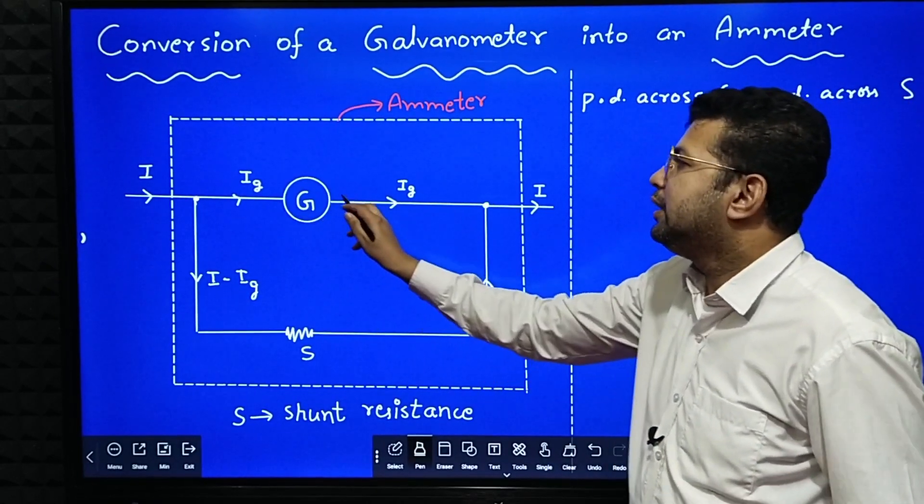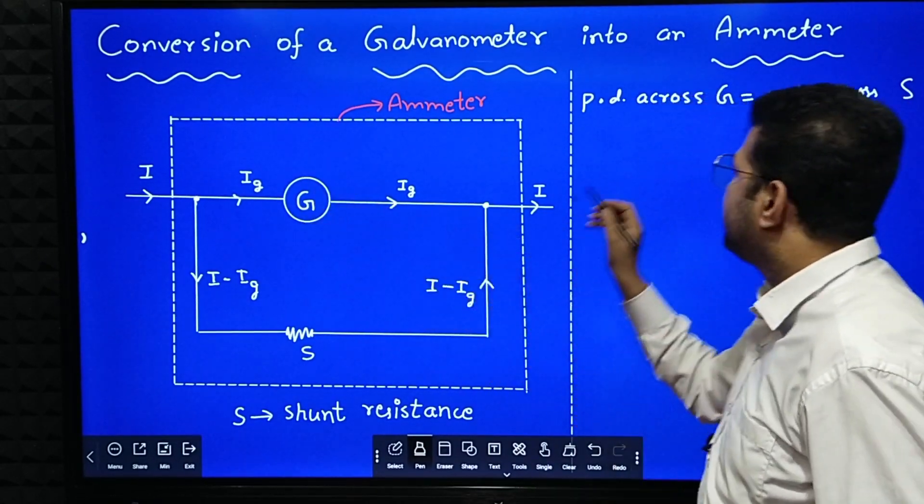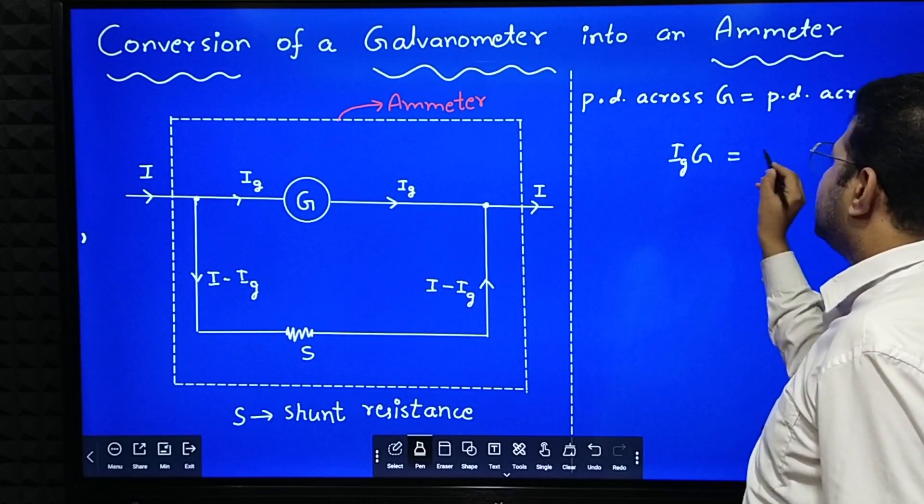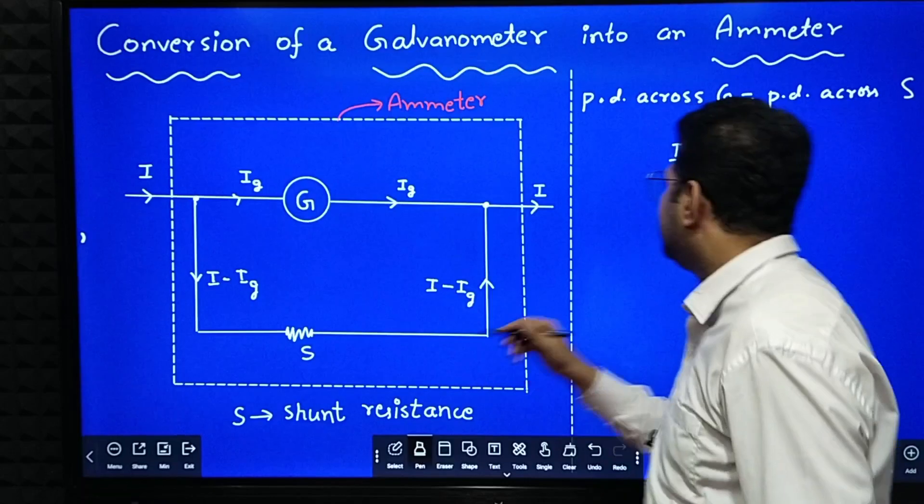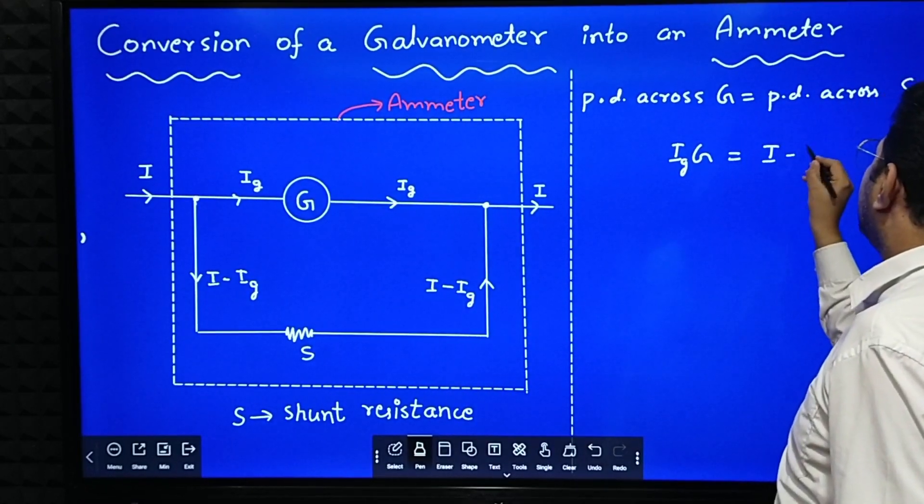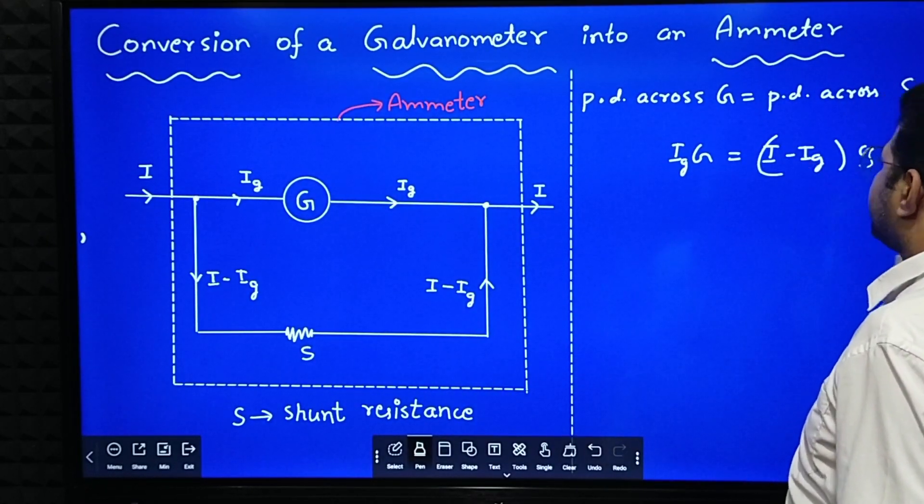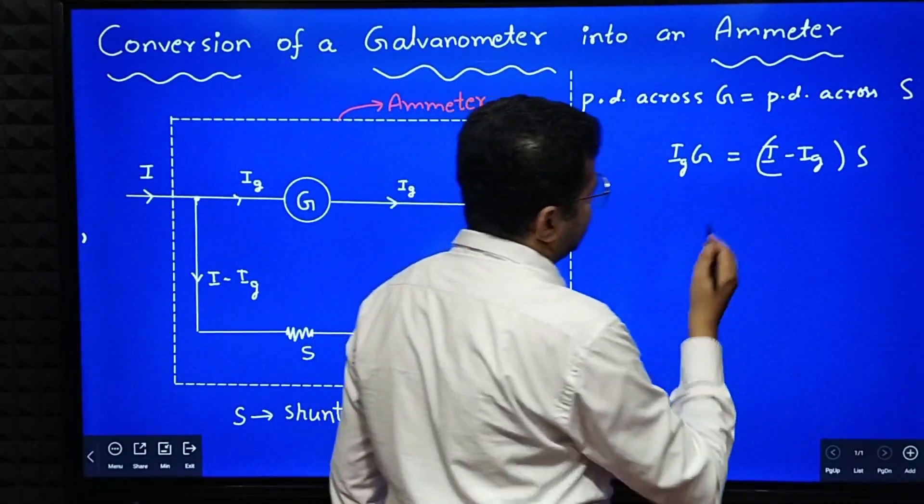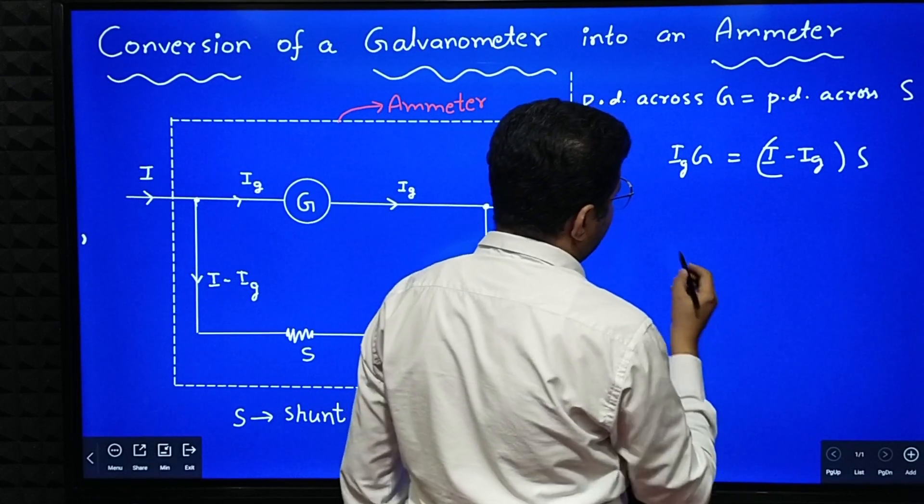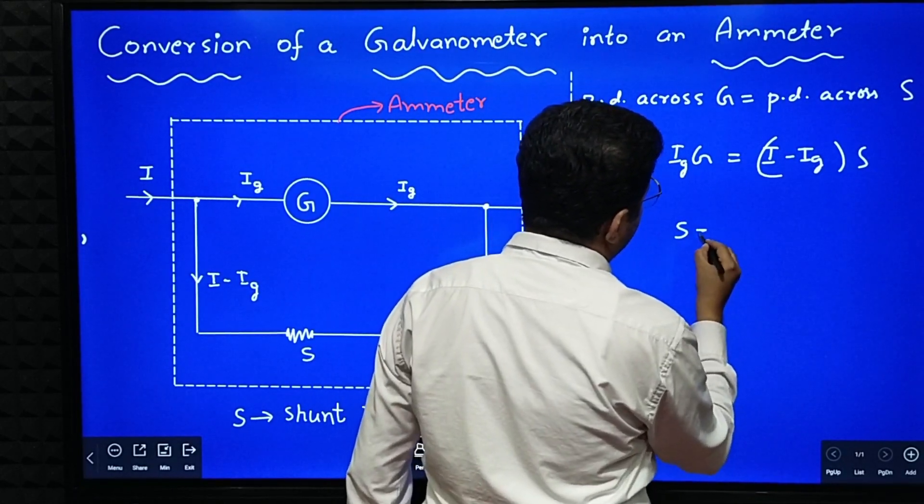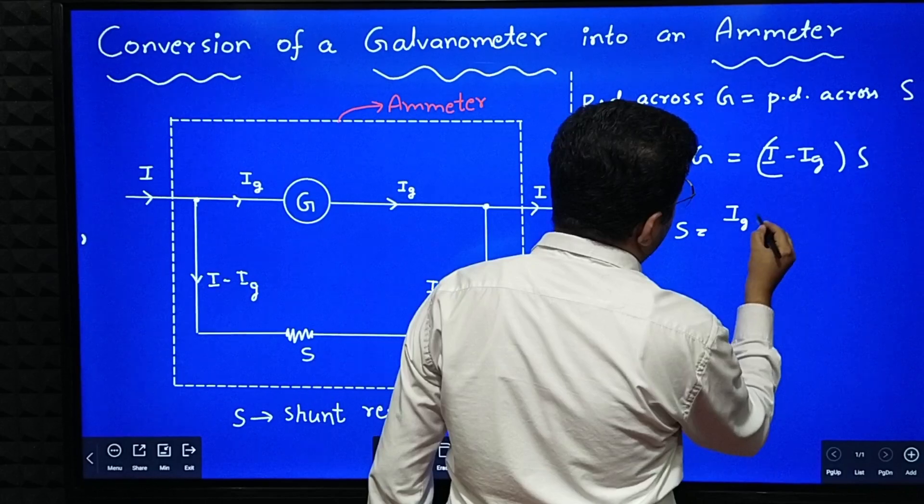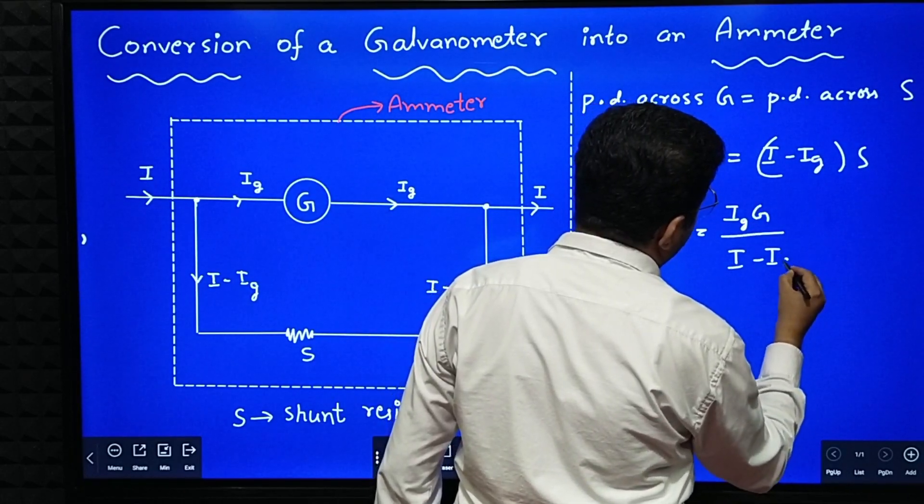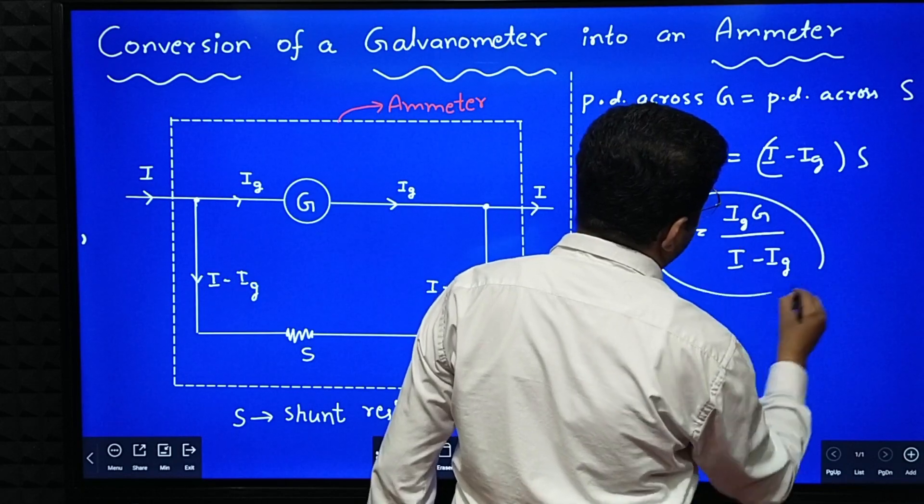What is potential difference across G? Say the resistance of the galvanometer is G, so I can write Ig into G is equal to I minus Ig into S. Now I'll write an equation for S. S is equal to Ig into G divided by I minus Ig.